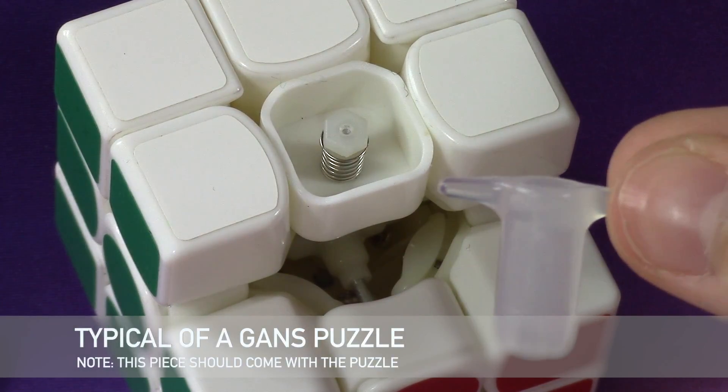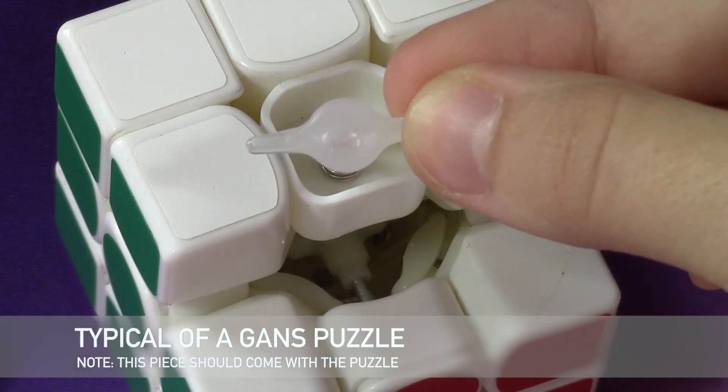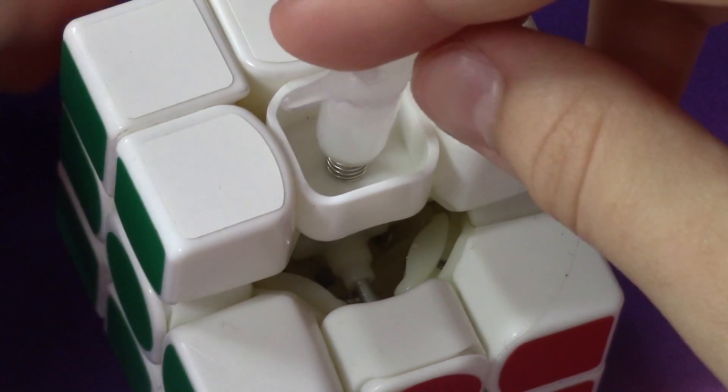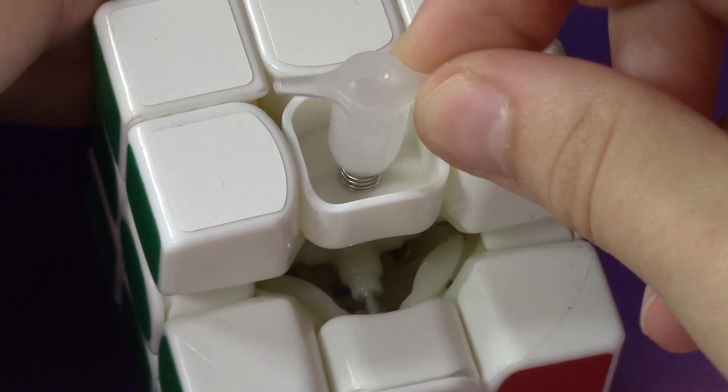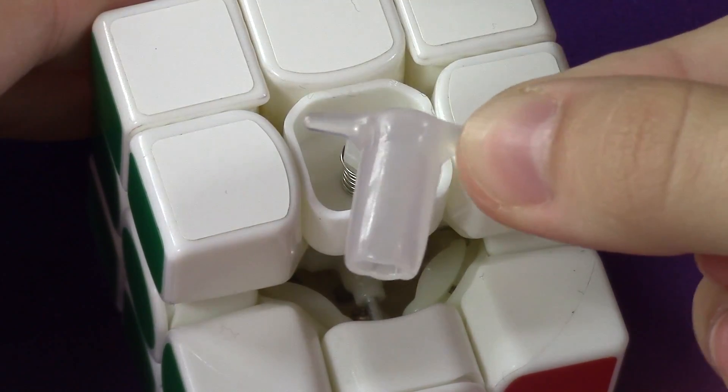While we're focused on the centerpiece, as you can see, it's a very weird way of tensioning. If you stick this plastic piece on top and twist, it'll either tighten or loosen the cube.